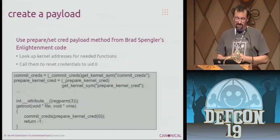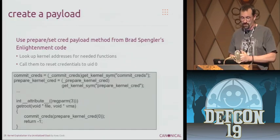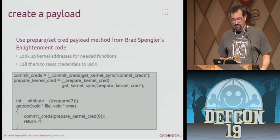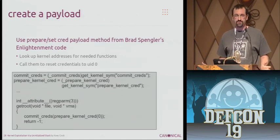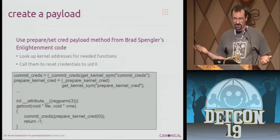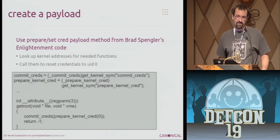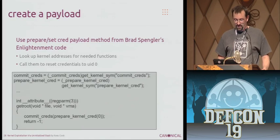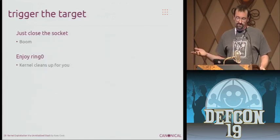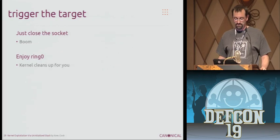Then we create a payload that we want the kernel to run. This is based on Brad Spengler's enlightenment code, where you basically just create new credentials as root and commit them to the local process — so you're just setting your UID to zero. This is the entire function the kernel needs to run to give you root as that process. Finally, after you perform the overwrite, you just close the socket and it'll call that function for you and everything's nice — the kernel cleans up for you.